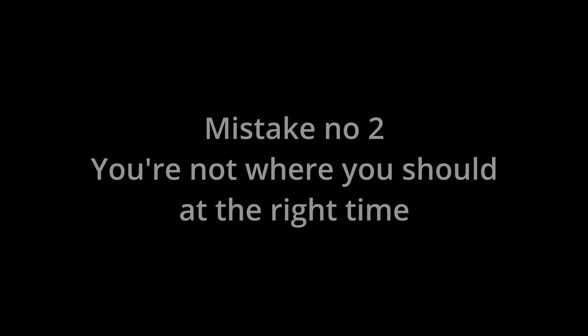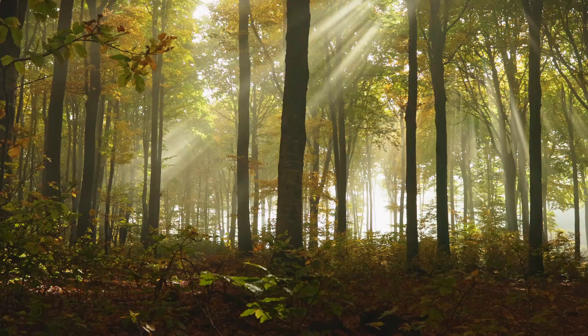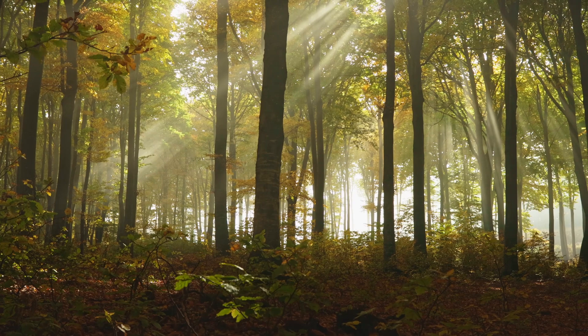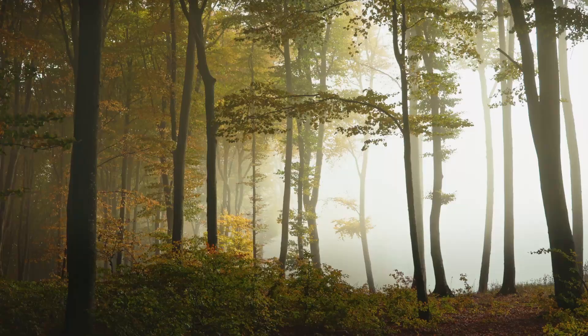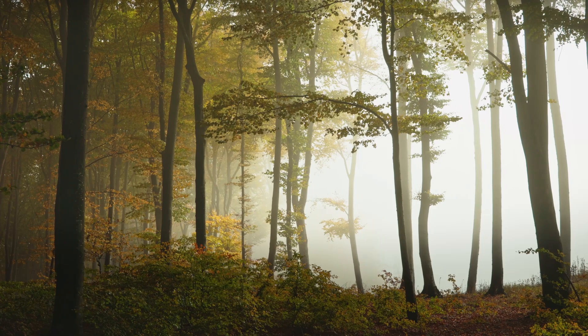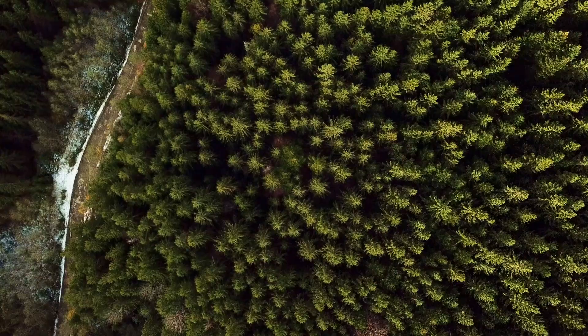Mistake number two: you're not where you're supposed to be at the right time. This happens usually because you don't understand how the local weather can affect the way the leaves are changing their colors. For example, if the leaves are turning yellow and orange and there is some snow falling or cold air in the atmosphere, then the leaves are going to turn darkish red or brown and will fall very quickly.